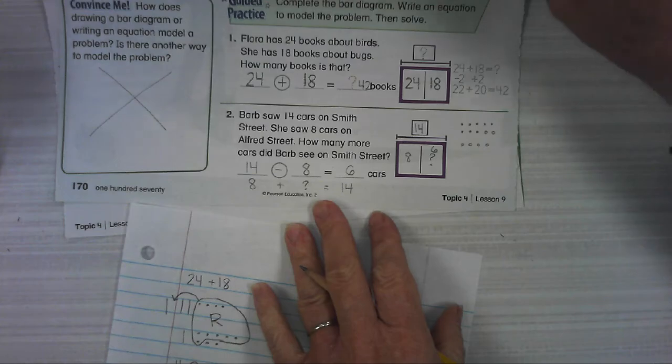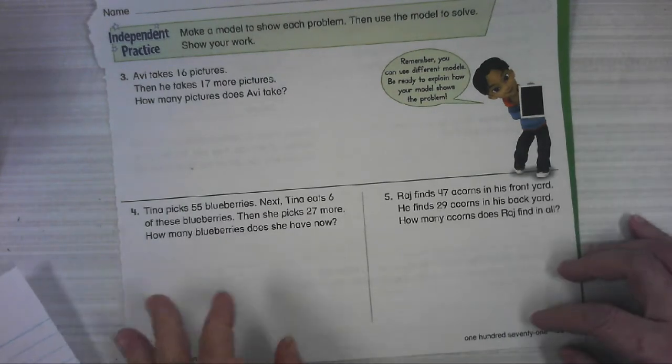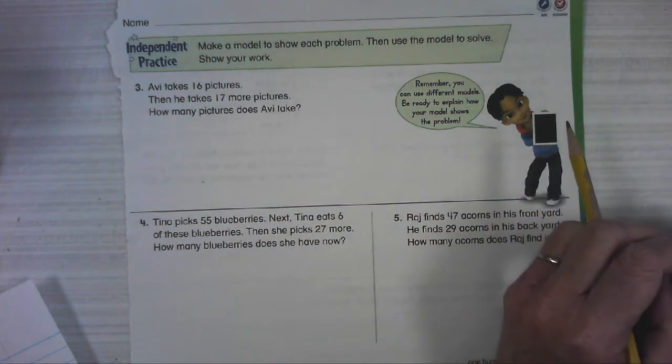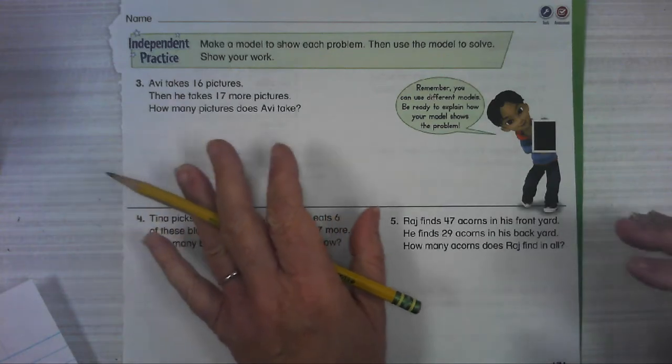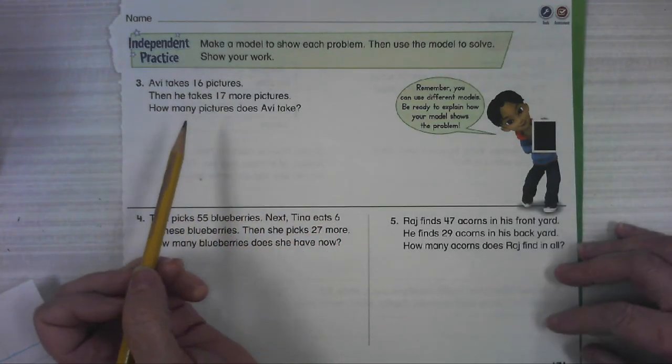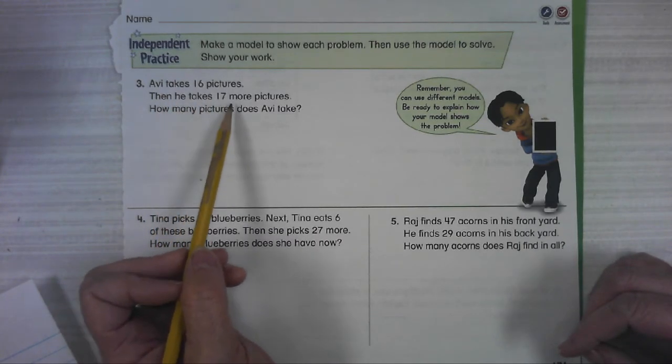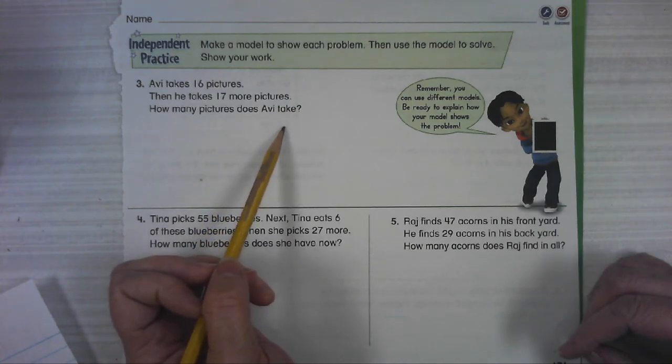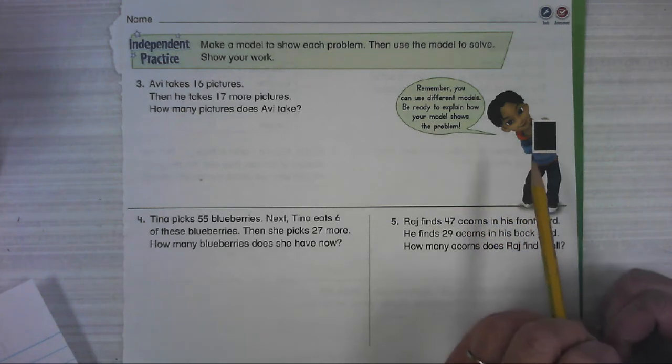Alright, you still with me? Alright, let's walk through the ones that you can do independently. Look, it's only three questions on the front. It says make a model to show each problem. It doesn't say what kind of model you have to make. You have to understand what the problem is asking you and then solve it your way. Avi takes 16 pictures. Then he takes 17 more pictures. How many pictures does Avi take? He's reminding you, remember you can use different models. Be ready to explain how your model shows the problem.